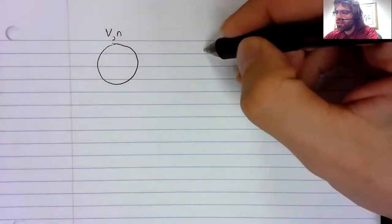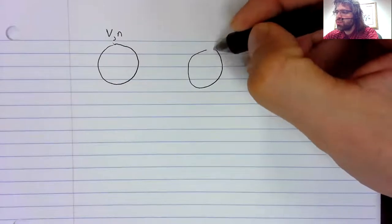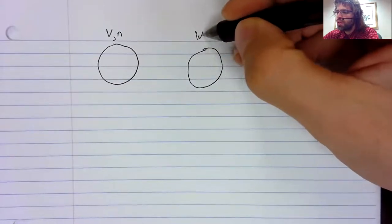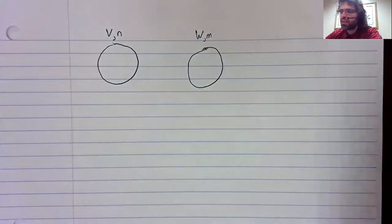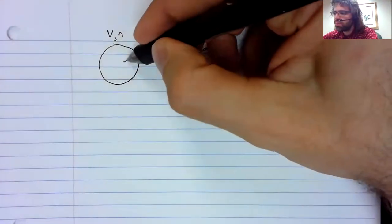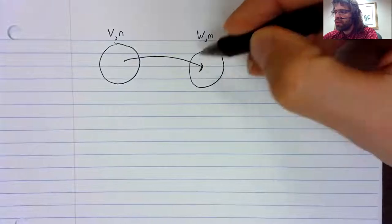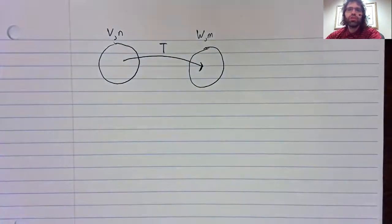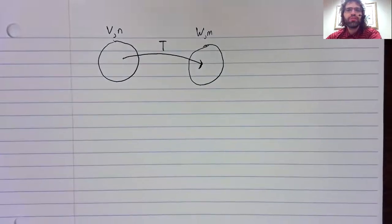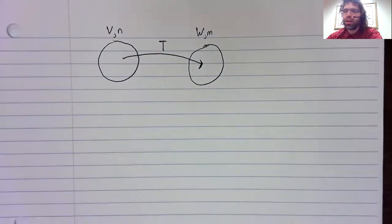An n-dimensional vector space V and an m-dimensional vector space W. And we have a linear transformation T from one to the other.